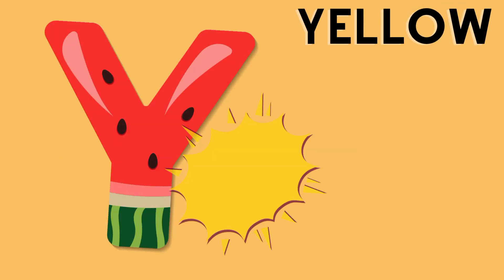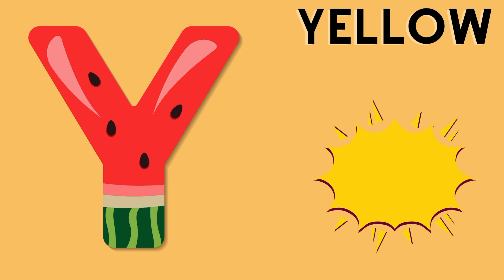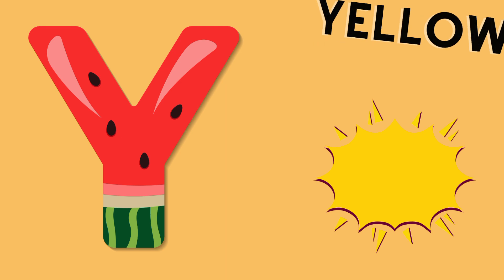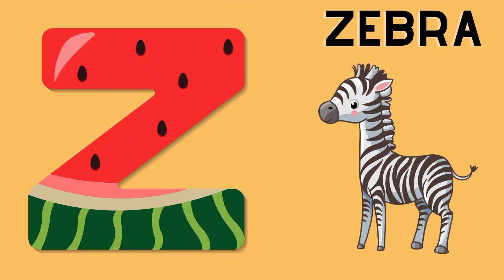Y is for yellow, y-y-yellow. Z is for zebra, z-z-zebra.